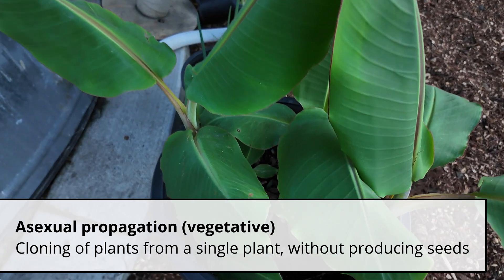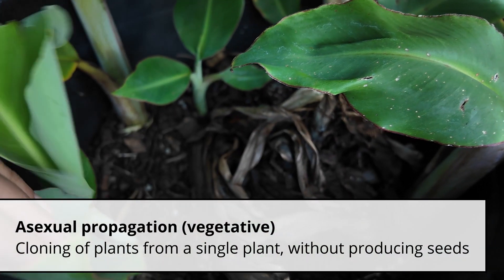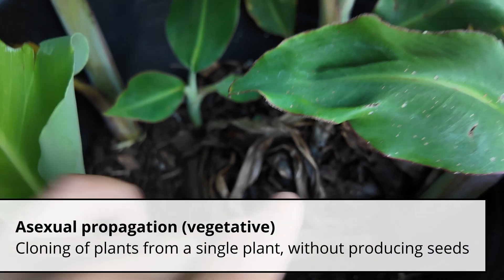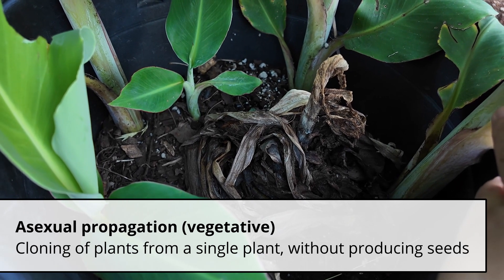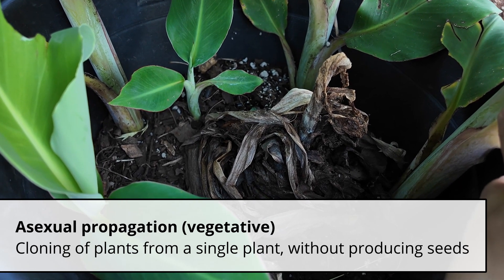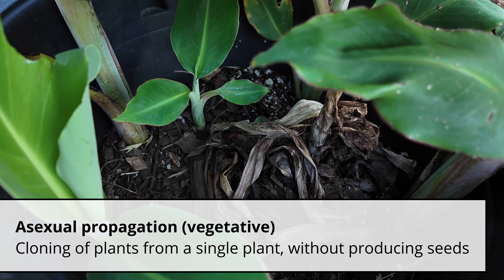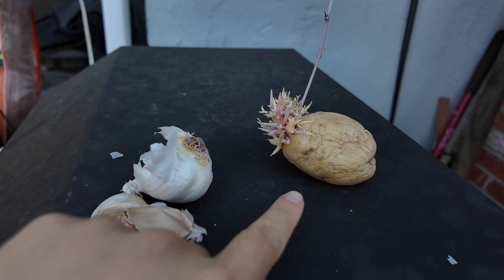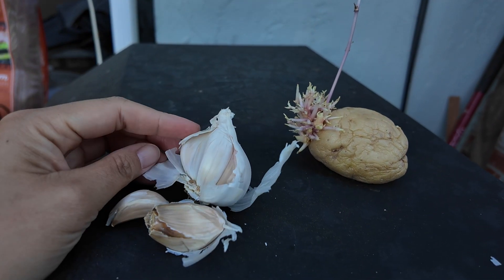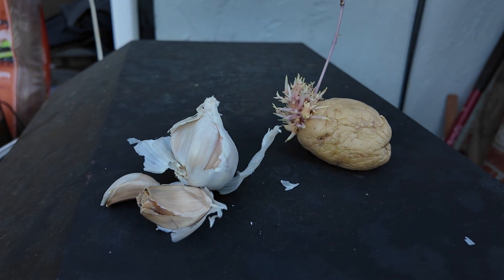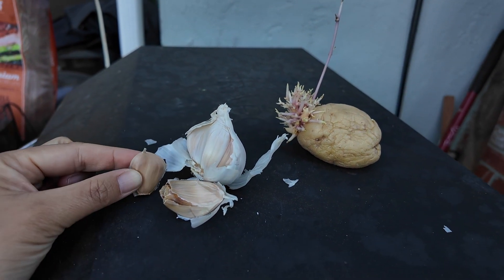The other category of propagation is vegetative or asexual propagation, where you take a particular part of the plant, divide it up, and get multiple new plants from that. For example, I can divide up the garlic into multiple cloves, and I can cut up the potato, and now I've got multiple plants from just these two.